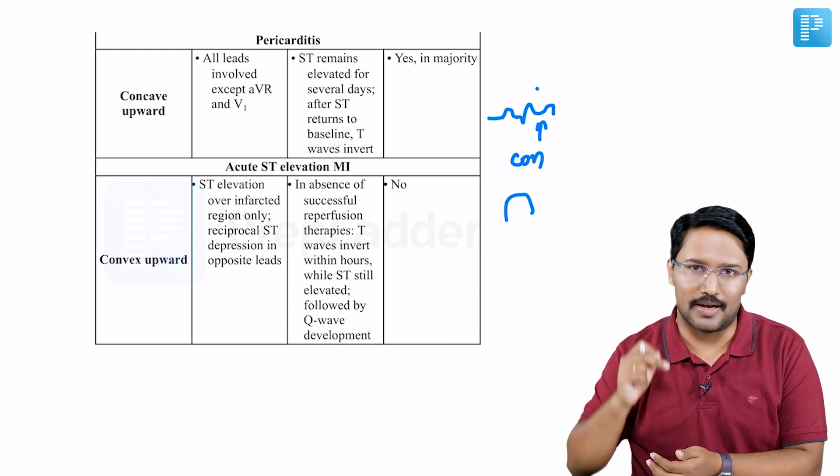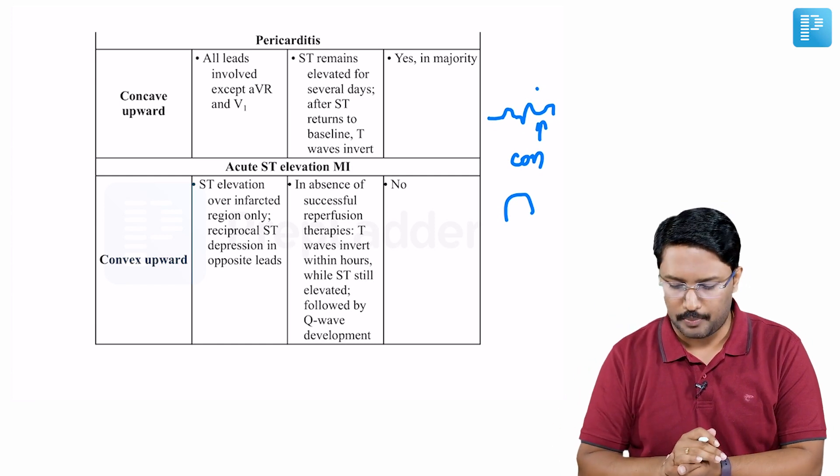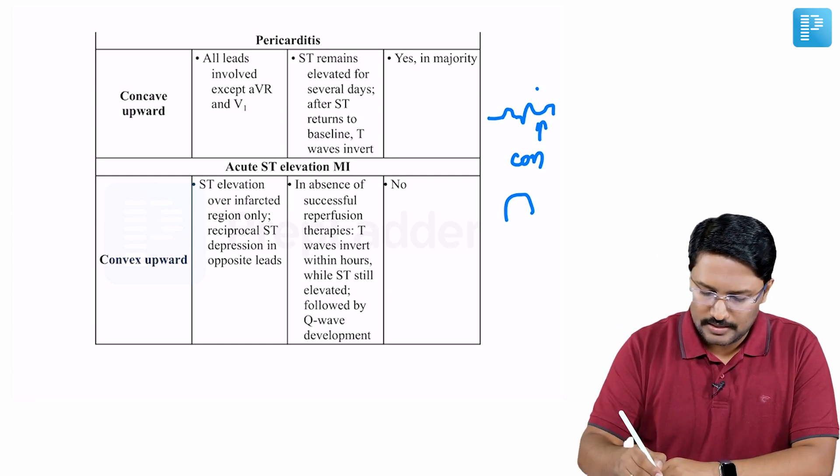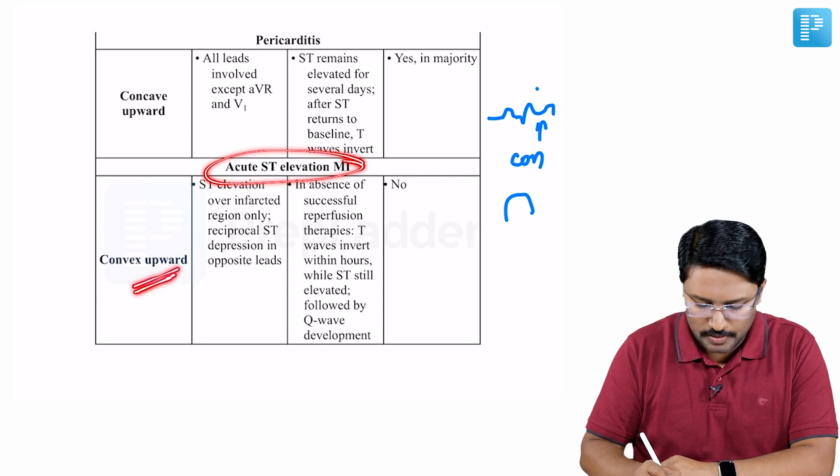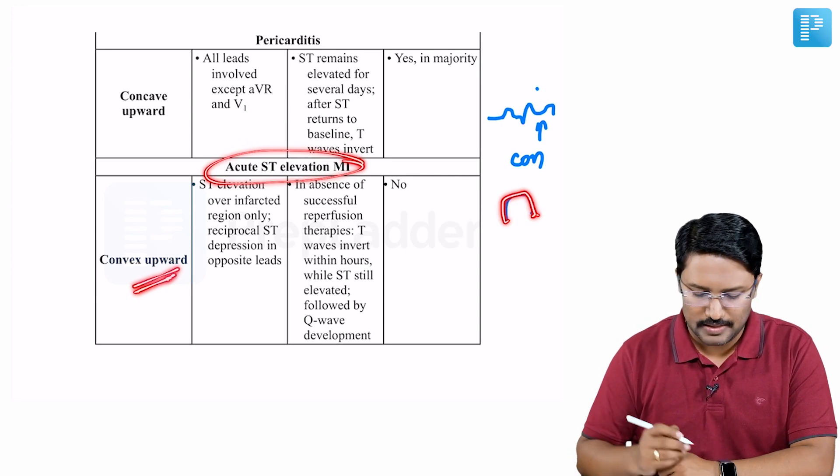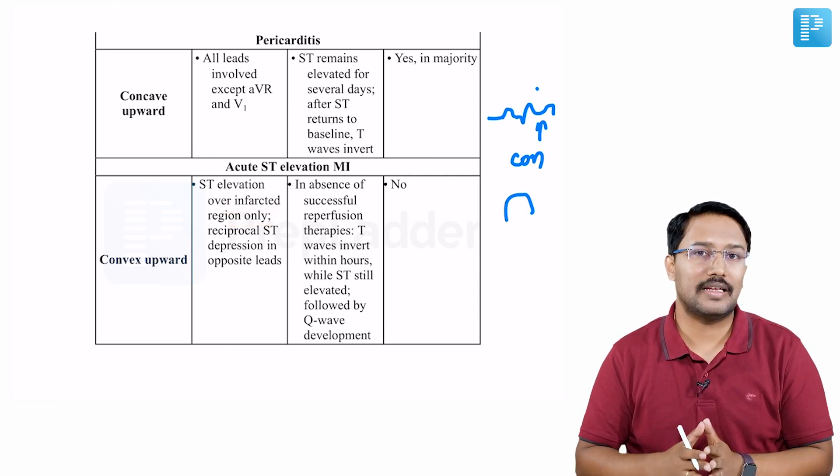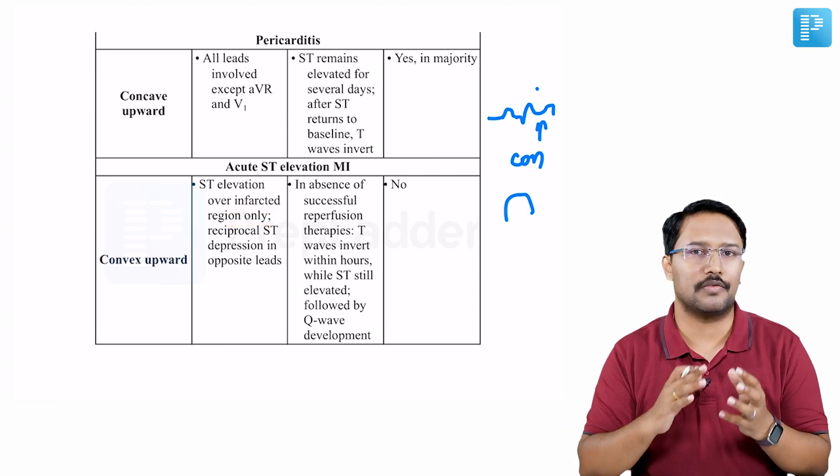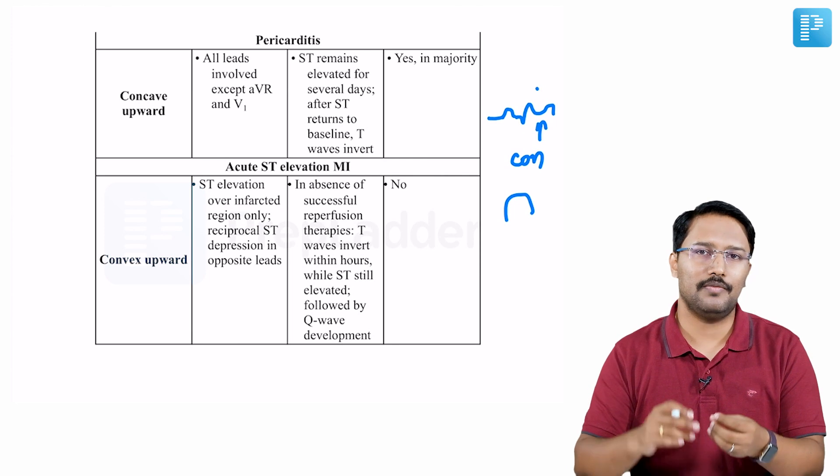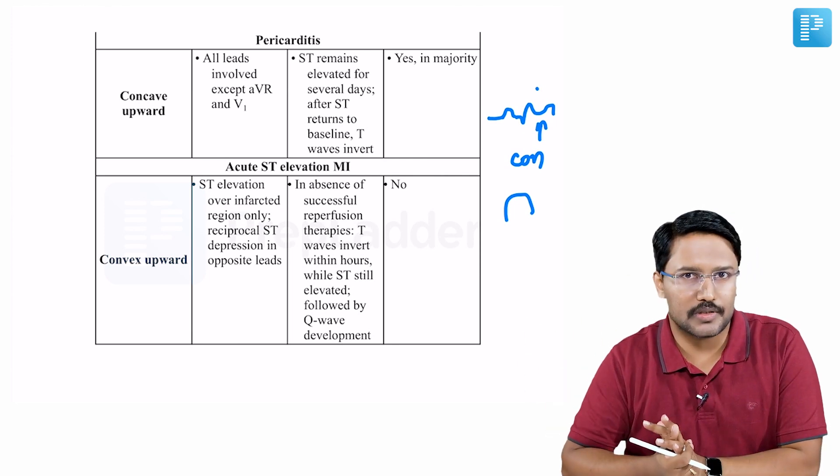The pathological Q waves and T inversion will start appearing. The ST elevation in STEMI is generally going to be convex upwards. You might have reciprocal leads if it's involving an area of the myocardium which has reciprocal representation.